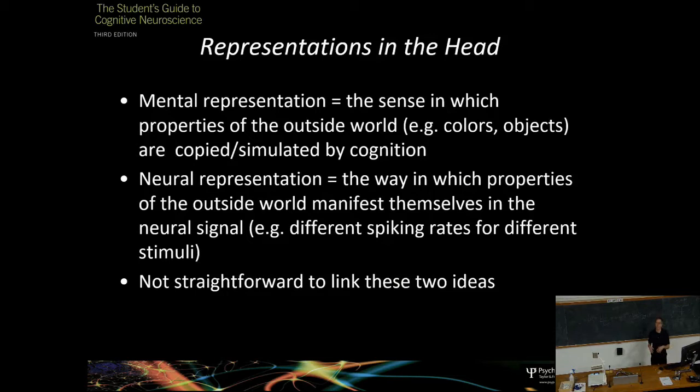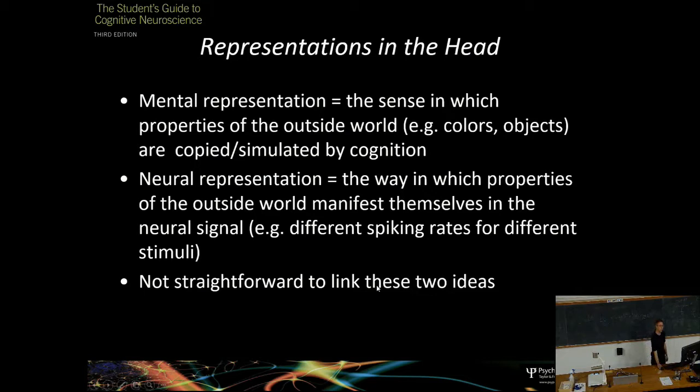One of the things we're trying to do is figure out how the world out there — our faces, our colours, our experiences — are represented by activity in here: the firing of neurons. We can talk about things like mental representation — objects, colours, or the mental representation of our grandmother, these kinds of concepts or ideas that we have.